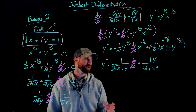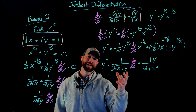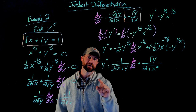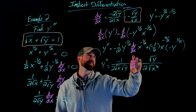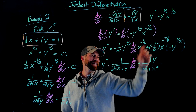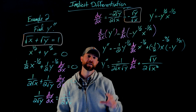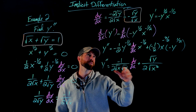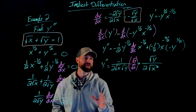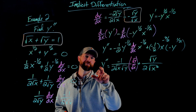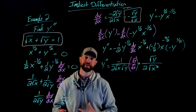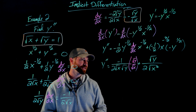Now comes the fun. I want to simplify as much as possible. I don't want to define the second derivative in terms of the first derivative, so I'm going to replace the dy/dx factor with the equivalent expression we found: dy/dx equals negative √y over √x. After that substitution, y double prime is now expressed purely in terms of x's and y's — not in terms of other derivatives — which feels a lot better.